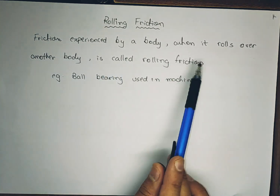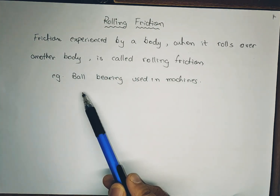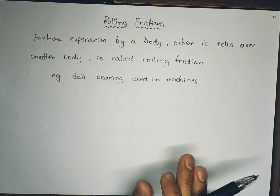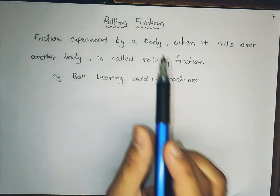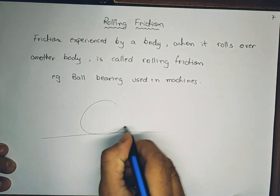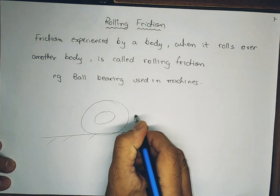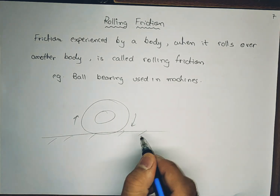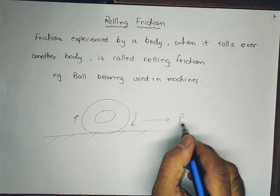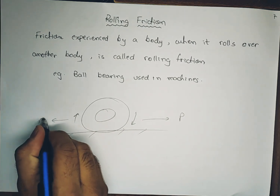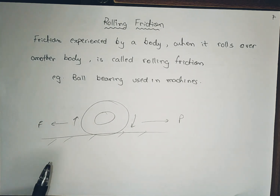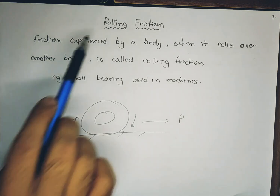Rolling friction is the friction experienced by a body when it rolls over another body. Examples include ball bearings used in machines, and car tires continuously rolling on the road surface. As shown in the figure, when the car tire rolls on the road and the car moves in one direction with force P, a frictional force opposes it — this is rolling friction. Rolling friction reduces the efficiency of the car.